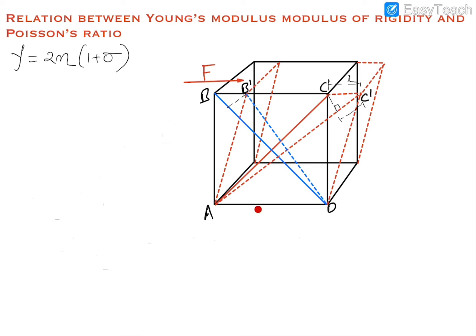Let us assume that there is a cube and its base is fixed. We have fixed the base of the cube somehow. Now we are applying a force F on its top surface and displacing the top surface with respect to the bottom surface, which is stationary.